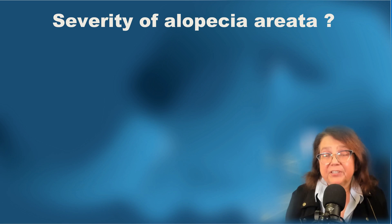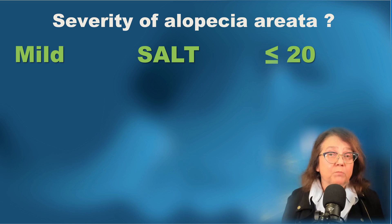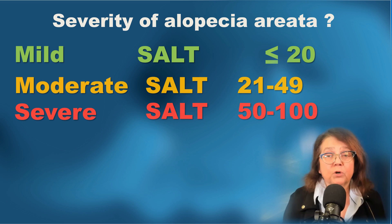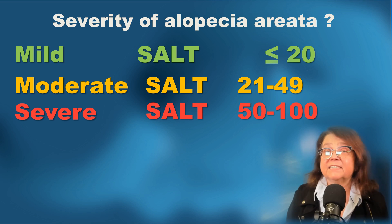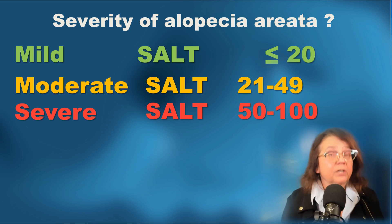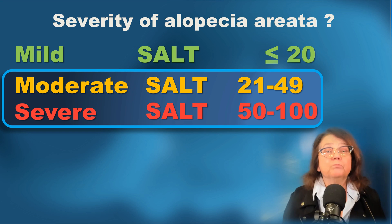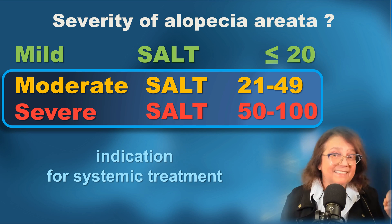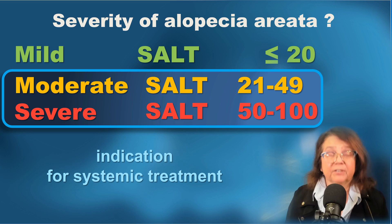What is severe alopecia areata? It is believed that if the SALT score is 20 or less, this is a mild form, because in most cases the patient can cover the hairless patches with the remaining hair. If it is more than 20 but up to 49, this is moderate severity, and a SALT score of 50 or more is severe. In cases of moderate and severe alopecia areata, most experts believe this is an indication for systemic therapy, such as JAK inhibitors.